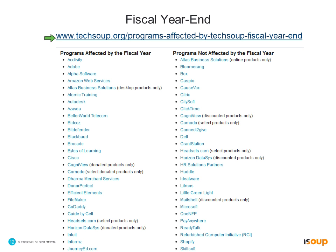Many programs allow one per year with the fiscal year as the reset period. Some bigger programs like Microsoft are not affected by the fiscal year — they have limits set on an entirely separate two-year calendar. So keep in mind that not all programs reset on July 1st: some do, and some don't. With that, I'm going to go ahead and share my desktop.